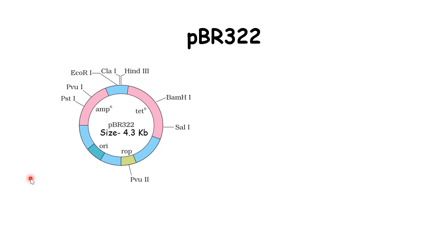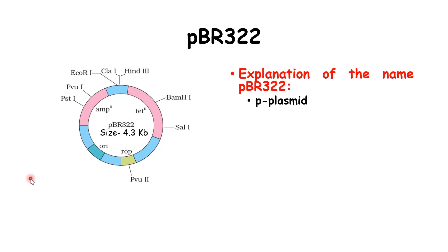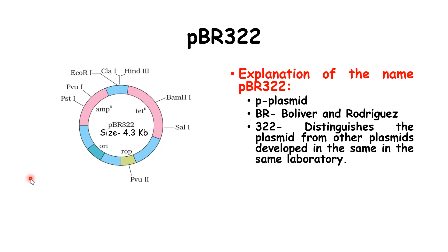Let us discuss the famous plasmid PBR 322. This discussion is immensely important for your NEET examination. In PBR 322, P stands for Plasmid, BR stands for Bolivar and Rodrigues, and 322 is the number given to the plasmid that separates it from other plasmids developed in the same laboratory — like an Aadhaar number unique to each individual. The size of the plasmid is 4.3 kilobases.